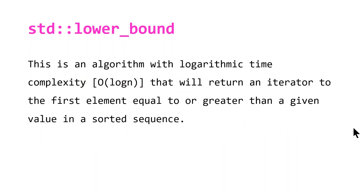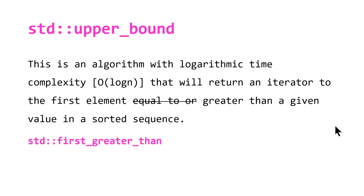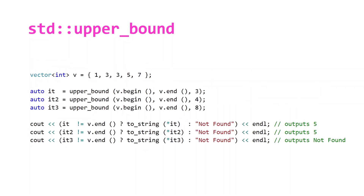Looking at the definition of std::upper_bound compared to lower_bound, the only thing that's changed is that it's not 'equal to or greater than' — it's just 'greater than' a given value. I like to think of upper_bound as 'first greater than'. Using the exact same code but calling upper_bound instead, the only difference is that the first iterator now outputs five, because it's strictly greater than rather than equal to or greater than.